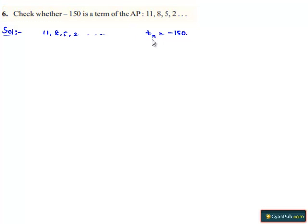If we find the value of N, then if it is a natural number, then minus 150 is a term of AP. Else if we get any decimal or a fraction for the value N, then it is not the term of AP. So let us verify that.